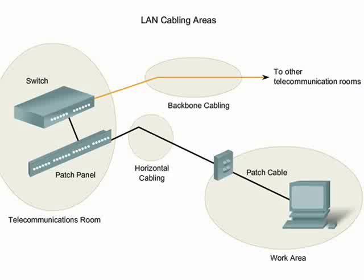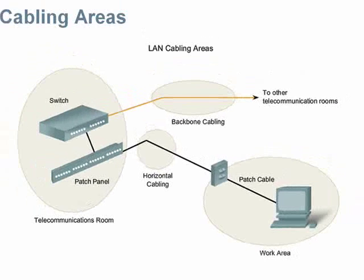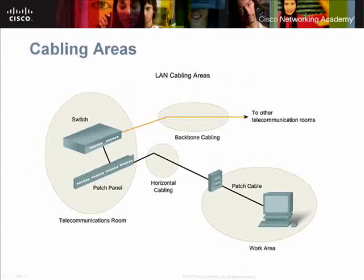Horizontal cabling refers to the cables connecting telecommunications rooms with work areas. Backbone cabling refers to cabling used to connect telecommunications rooms or to connect the facility to an ISP. Backbones typically require high bandwidth media such as fiber optic cabling to assure users have access to outside resources.